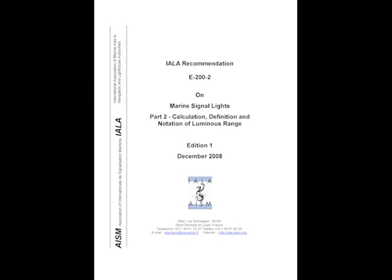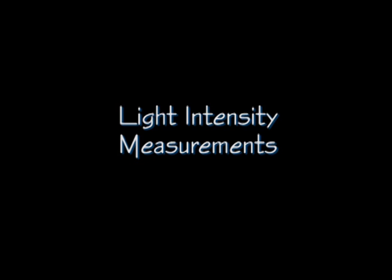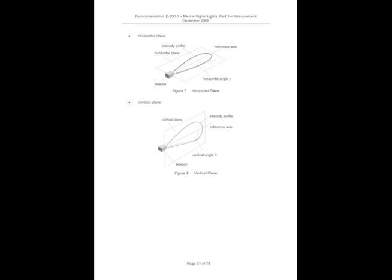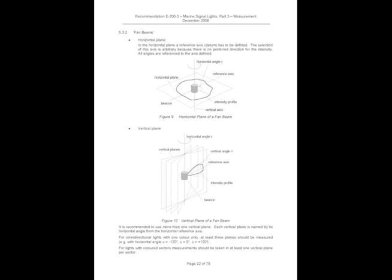Marine signal light calculations, definition, and notification of luminous range recommendations are specified in IALA, the International Association of Marine Aids to Navigation and Lighthouse Authorities. IALA Recommendation Document E200-3 also specifies the procedures to measure and document light intensities.